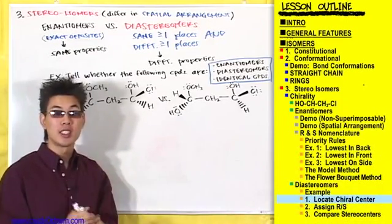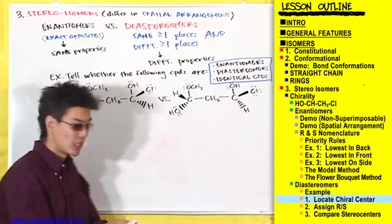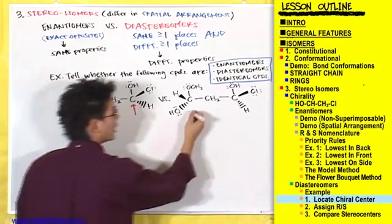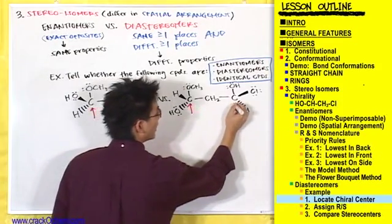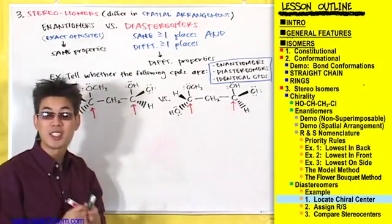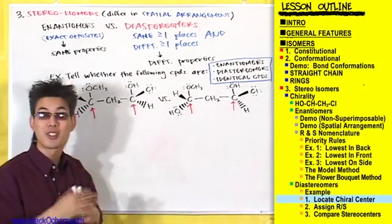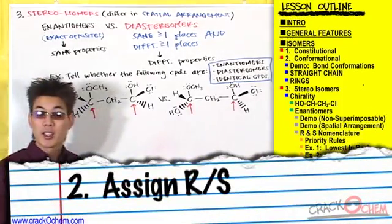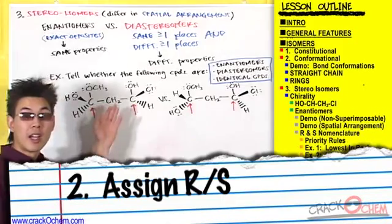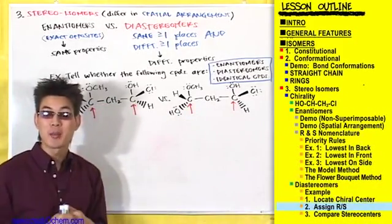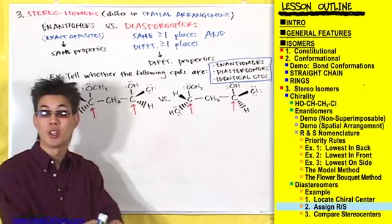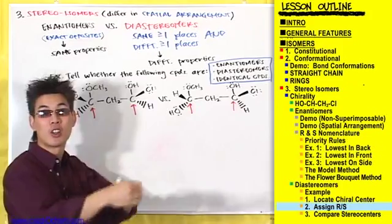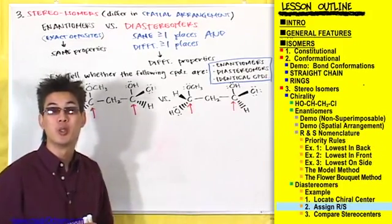You should notice that there are two stereocenters in each one of these compounds — one here and another one here, and likewise one there and one there. Remember, a chiral center is just a carbon with four different substituents on it. The next thing you want to do after you find each chiral center is to assign stereochemistry to each one, whether each one is R or S. Let's go through this pretty quickly.